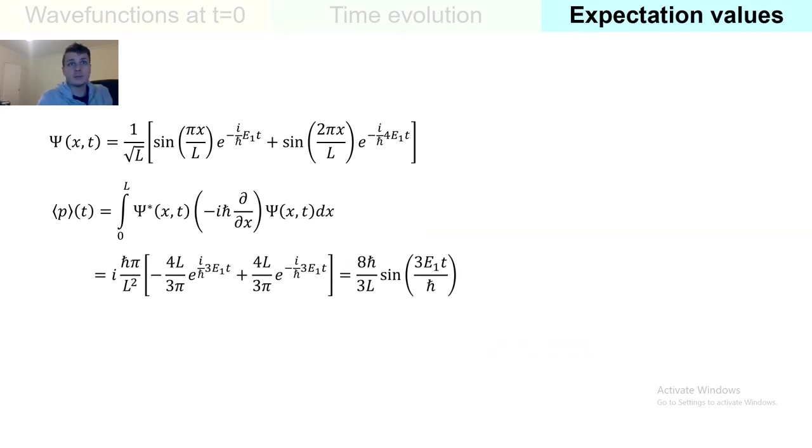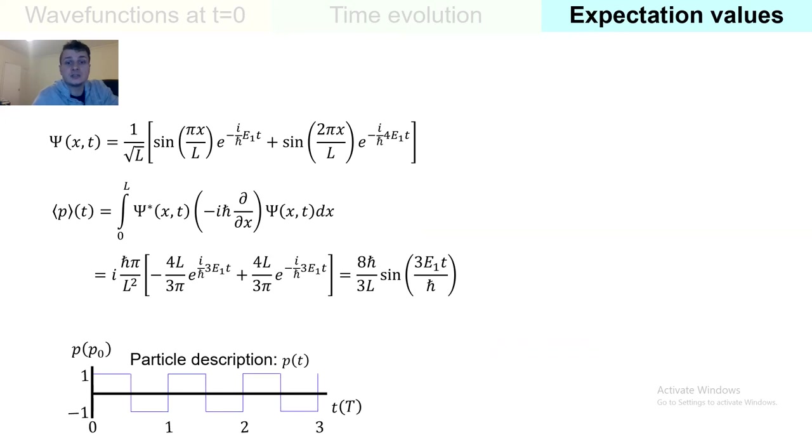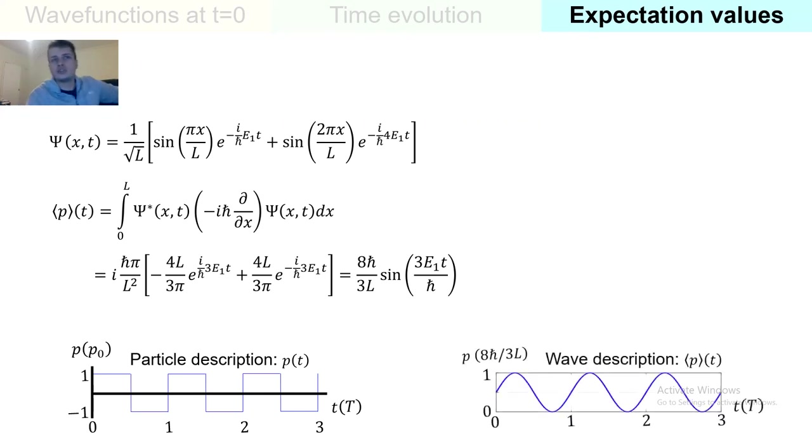And as previously, we could compare this sinusoidal behavior with the particle description that we had before. In the classical approach, we had a square function with sharp changes in the momentum every time the ball hits a wall. In this exercise, using this particular linear combination of wave functions, we expect that the momentum is not going to oscillate like that, but sinusoidally between its maximum and minimum value, reaching zero every time the ball hits the wall.